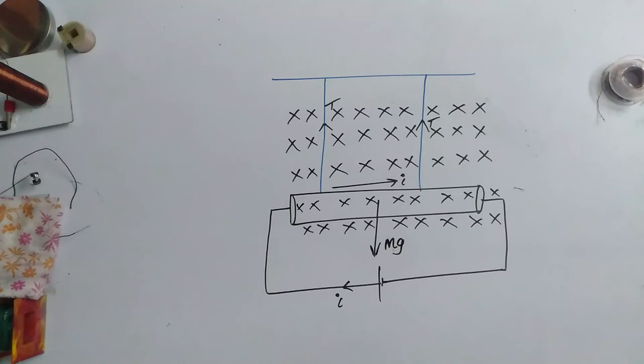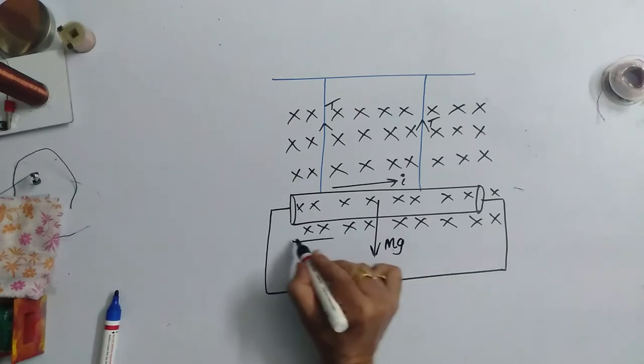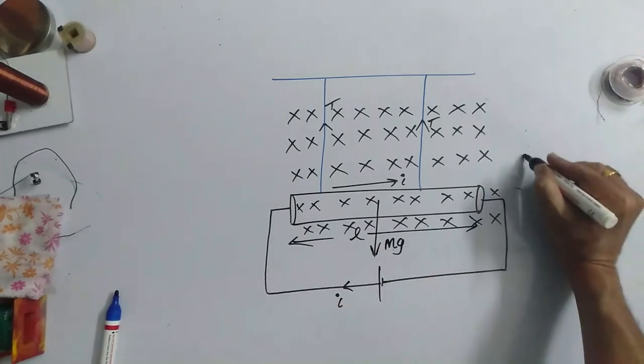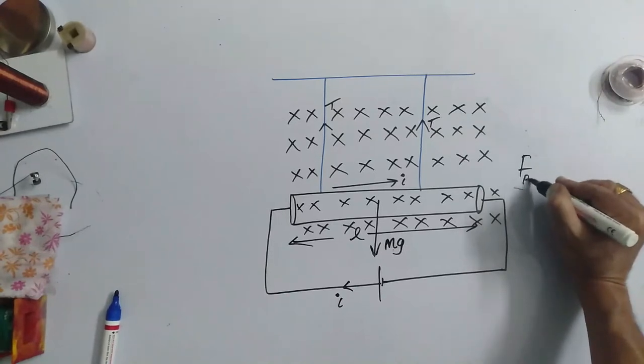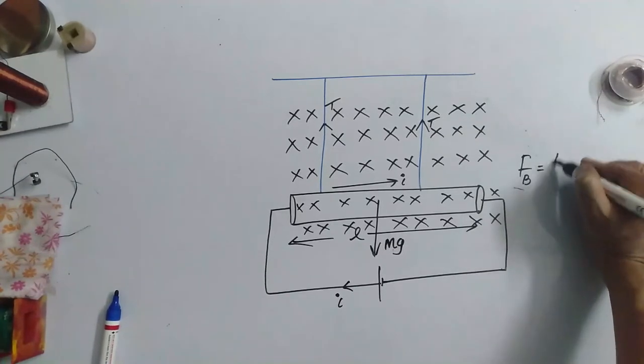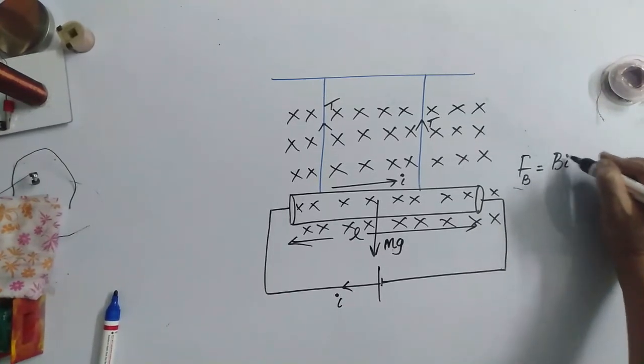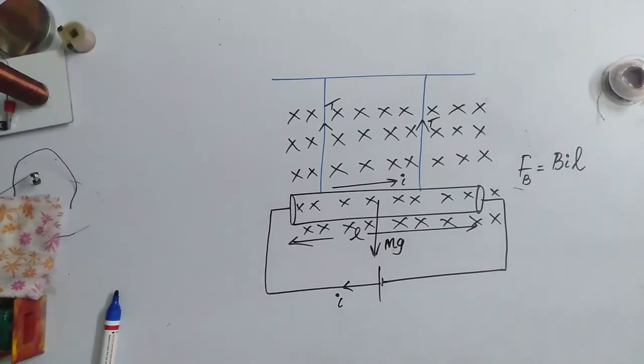Now, only one force is left out here. That is the force experienced by the conductor because it is placed in the magnetic field. That force also we know if you take this length of the conductor as L. We know that the force experienced due to that magnetic field is B I L.